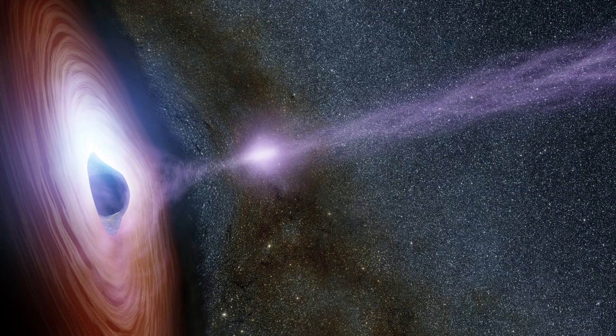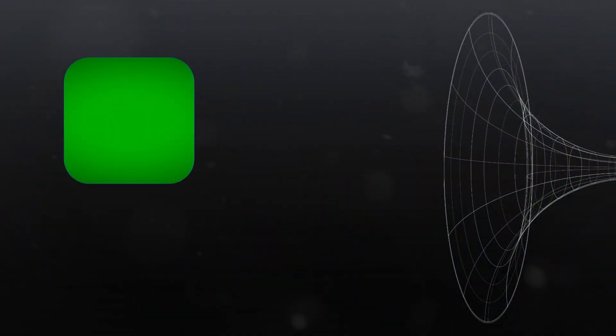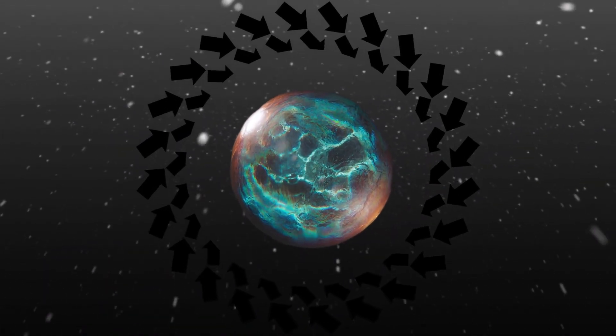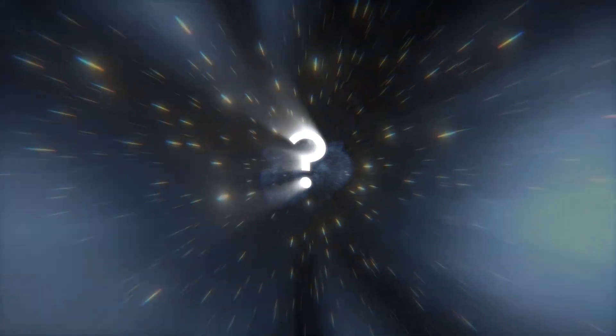And the best part: wormholes are not science fiction concepts. They are mathematical possibilities. But making one stable enough for anything to pass through is a challenge. They would need exotic forms of matter with negative mass to stay open. This is why scientists have long doubted their existence.